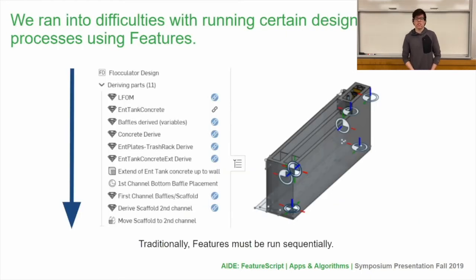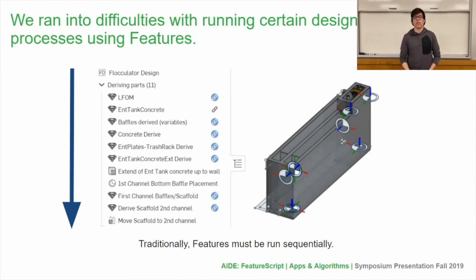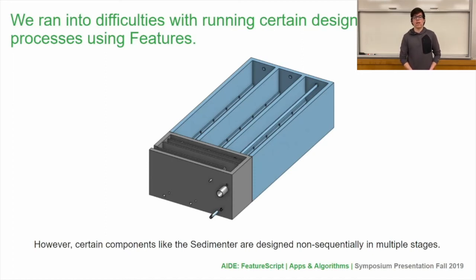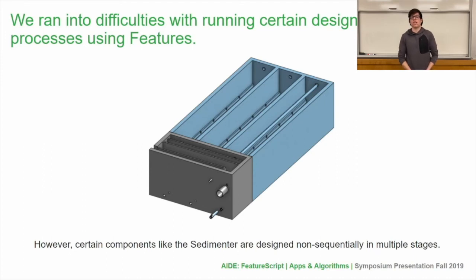We ran into difficulties with running certain design processes using features. Within FeatureScript, features are run sequentially — they only go in one direction, they have to go forward — but we needed them to go back and forth between determining measurements in the Part Studio. One example of this is with the flocculator, which requires iterative calculation to determine its volume. Another challenge was that when we design parent components that require subcomponents, we wouldn't be able to go back and forth. An example is the sedimenter, which has a sedimentation channel and a set of sedimentation tanks. The sedimenter depends on both of these, so it requires going back and forth in order to complete the design, and we had to design a model that would allow us to do that easily.